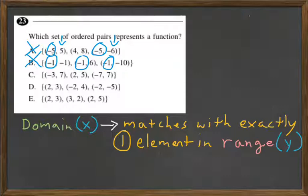On C, you have a negative 3, a 2, and a negative 7. Those are all different, and the negative 3 goes to a 7, 2 goes to a 5, negative 7 goes to 7. Those are all different things being pointed to, so there's only one match for each. So our answer on this one is definitely going to be C. C is the answer.